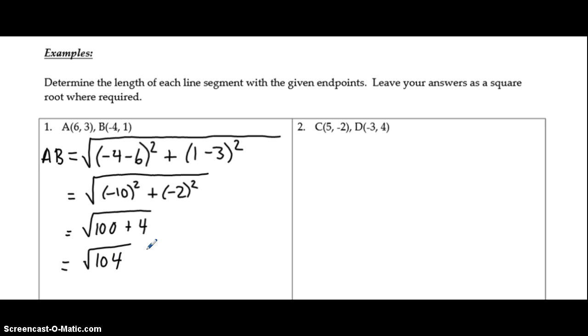Simplify by adding those together and we get the square root of 104. Now if we try to take this square root, we are going to get a decimal answer. So the instructions tell us up here to leave your answers as a square root where required. So in this particular instance, if we round, we're going to have an inaccurate answer. So we'll leave it as a square root.